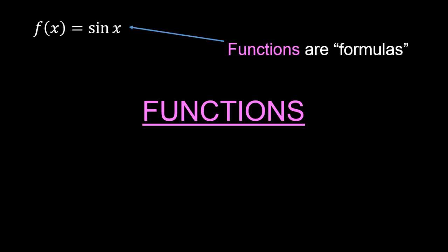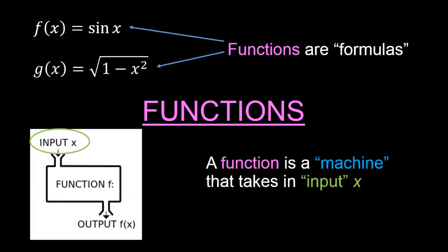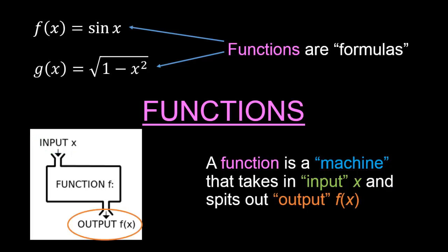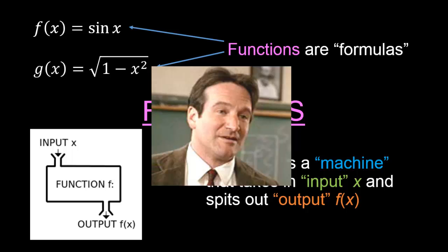Functions. You may previously have learned that functions are formulas. For example, we have the function f(x) equals sine x, or we might have the function g(x) equals the square root of 1 minus x squared. Alternatively, you might have been taught that a function is like a machine — it takes in input and it spits out output. Let's see what the renowned mathematician Robin Williams thinks about this.